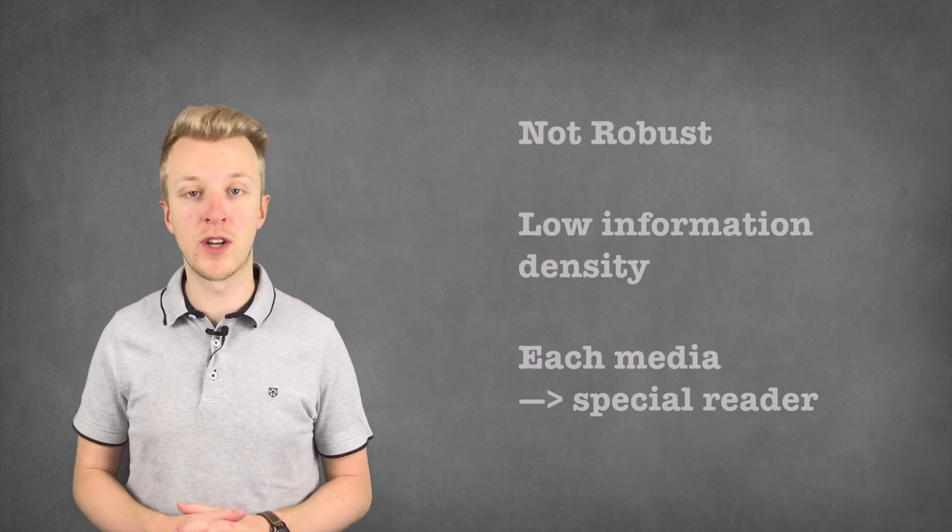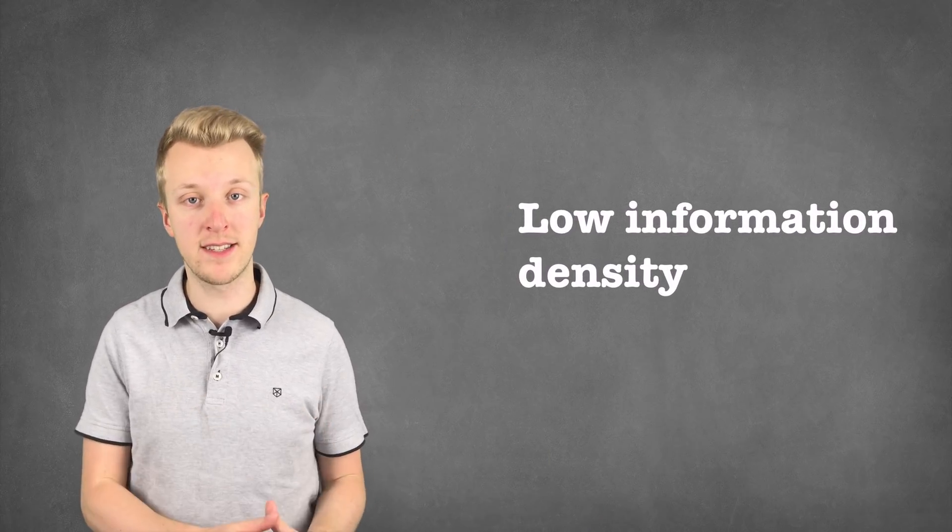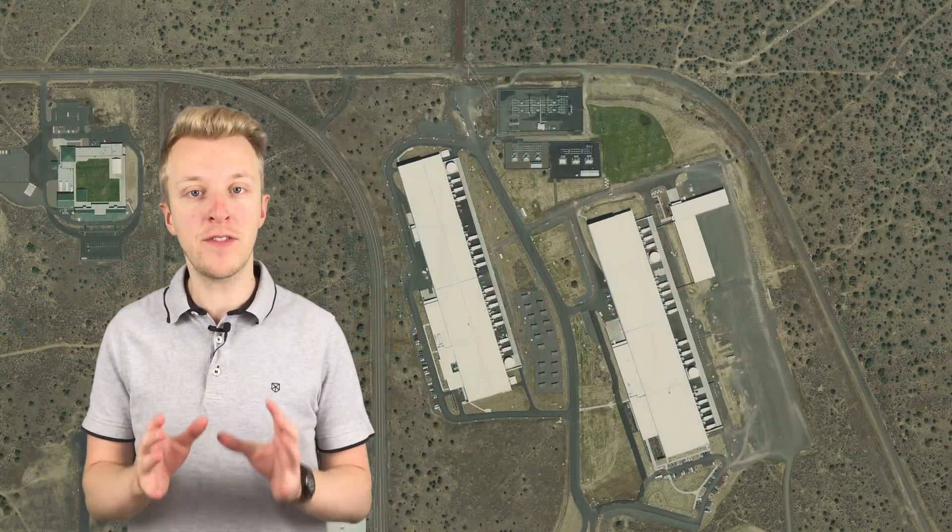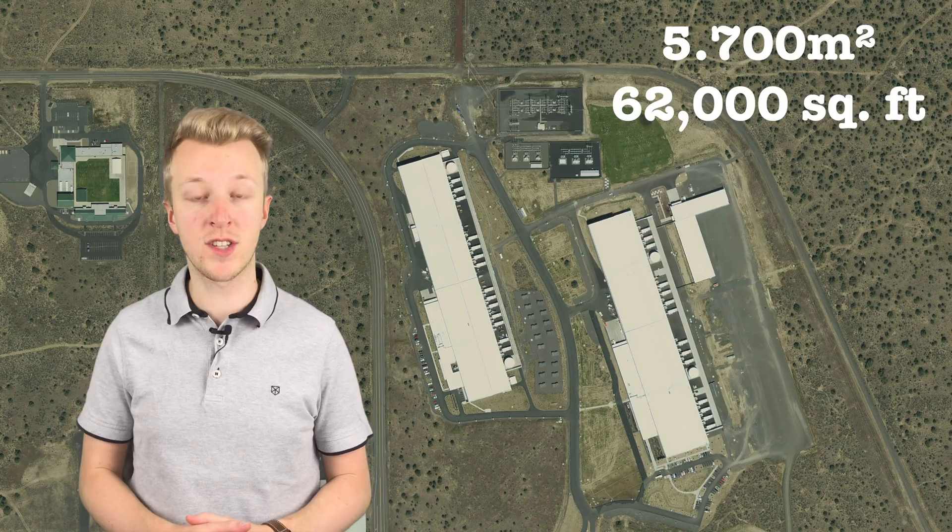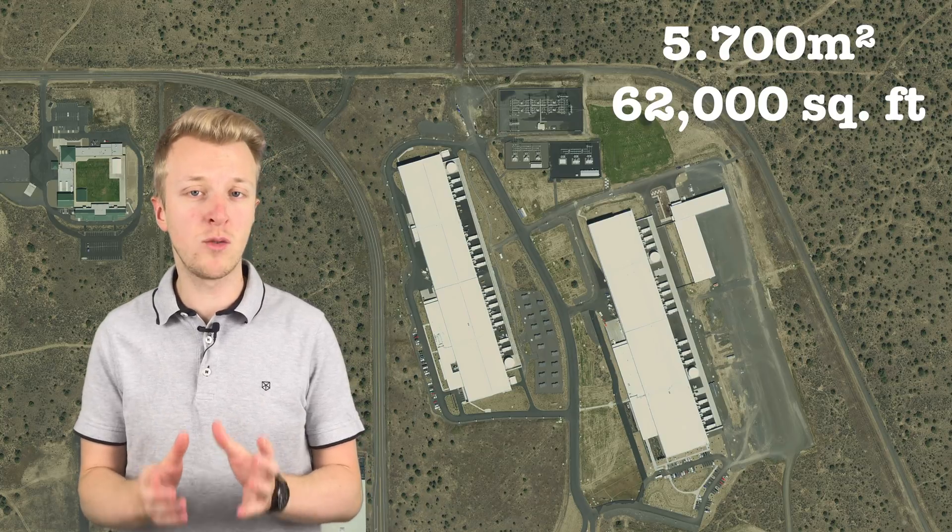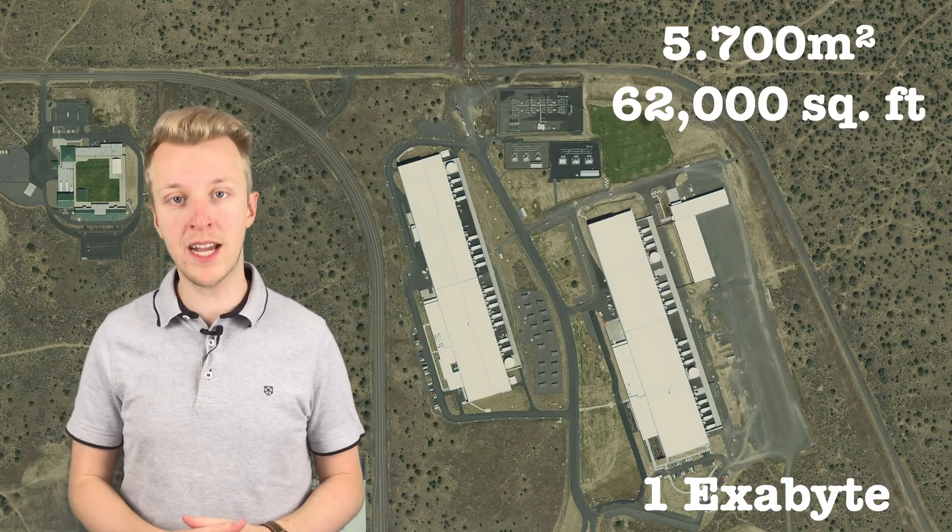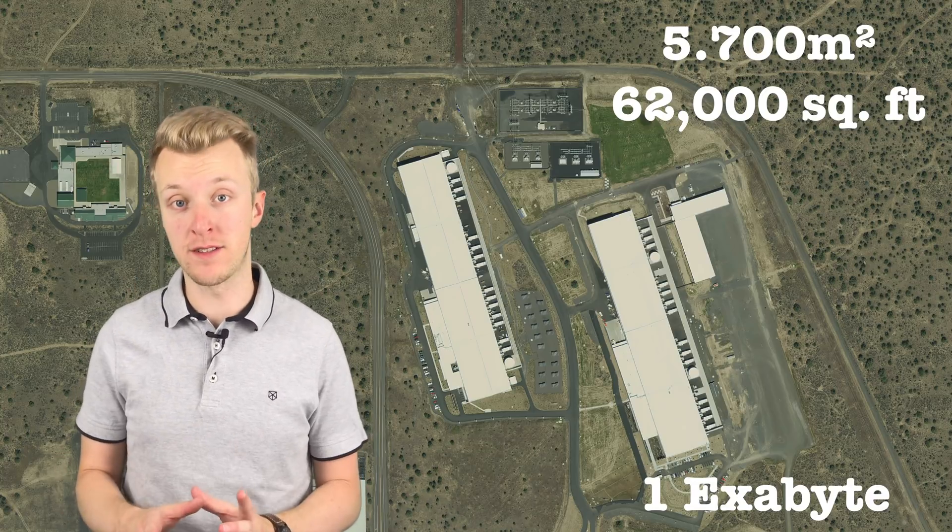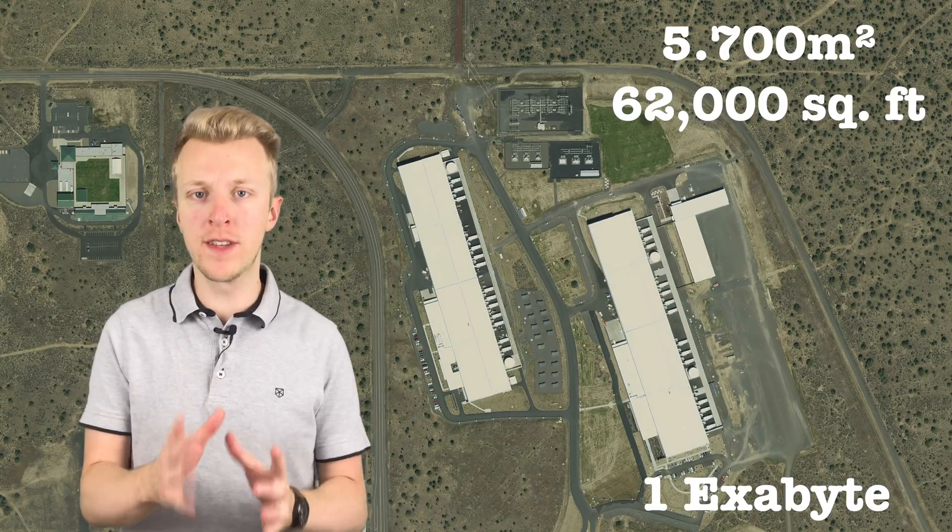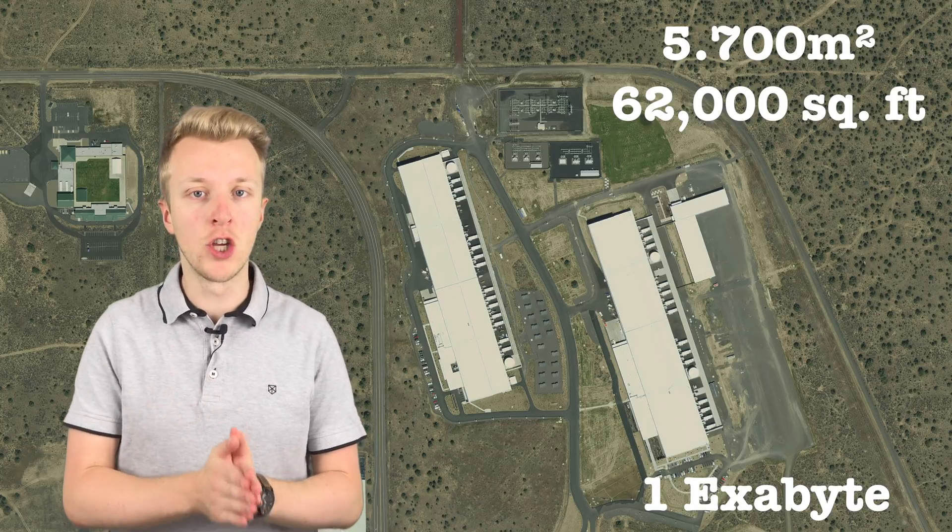The second problem that we currently face is information density. This is Facebook's cold storage data centers in Oregon. It is over 5,700 square meters in size and can store approximately 1 exabyte of data. That is over 1,000 petabytes and over 1 billion gigabytes. That sounds impressive, but if you want to store all of the data that was generated in 2018, you would need 33,000 of these data centers. Yikes.